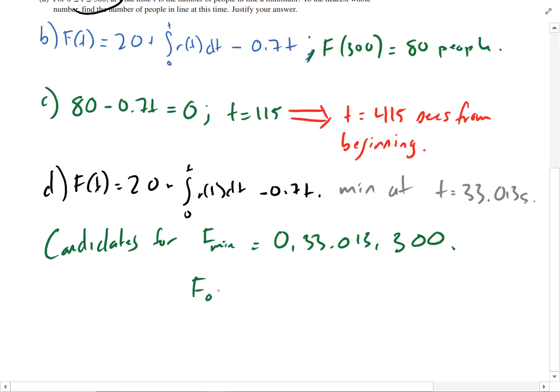F of 0 equals 20, F of 33.013 equals 4, and F of 300, as we found in step B, equals 80.